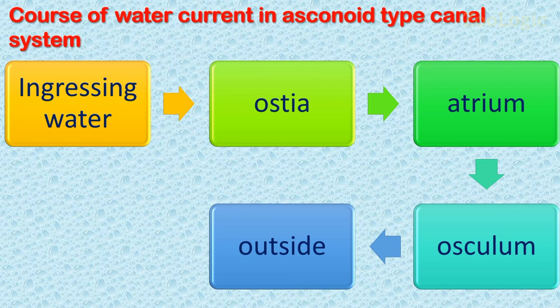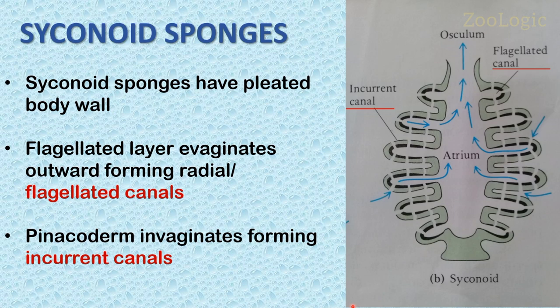Syconoid sponges have the sycon-type canal system, which is more complex than the ascon type. Syconoid sponges have folded body walls in which the flagellated layer is evaginated outward into finger-like projections, increasing the surface area. As shown in the diagram, the flagellated layer is evaginated outward, forming canals. These canals, formed by the evagination of the flagellated layer, are termed radial canals or flagellated canals.